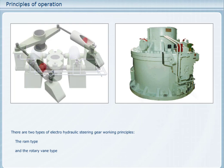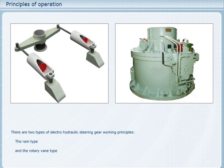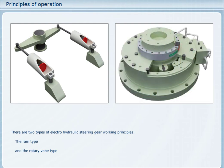In the ram type, the chamber is formed by rams or pistons in a cylinder. In the rotary vane type, each pressure chamber is formed between a fixed and moving vane.